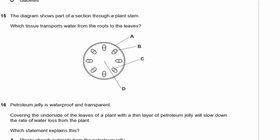Question 15: The diagram shows part of a section through a plant stem. Which tissue transports water from the roots to the leaves? That would be the xylem. Looking at the vascular bundle — is it the outside or the inside of the vascular bundle? It is the inside. The answer is C.